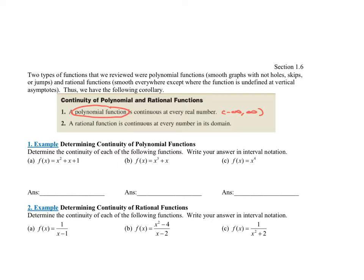A rational function is going to be continuous everywhere except when the bottom equals zero. So set the denominator equal to zero and solve, then exclude those numbers. Any time it's a polynomial, the answer is negative infinity to infinity. Any time it's a rational function, set the bottom equal to zero and solve — it's continuous at every number except those.